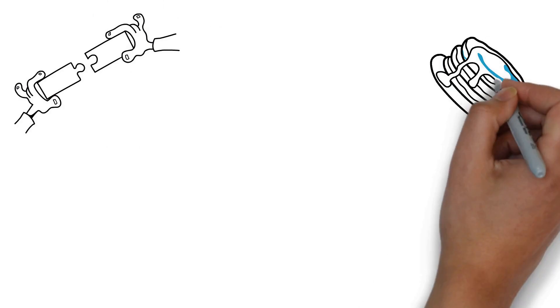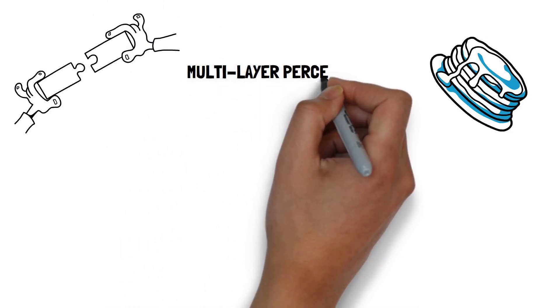When you link several perceptrons together into layers and stack these layers, you get a multi-layer perceptron, or MLP.